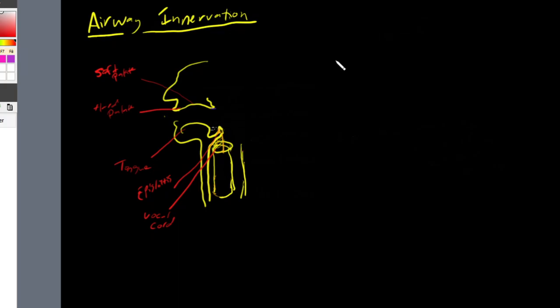In the last video, we talked about airway anatomy. In this video, we're going to take it a step further and talk about airway innervation — what are the nerves that supply sensation and motor function to all parts of our airway?